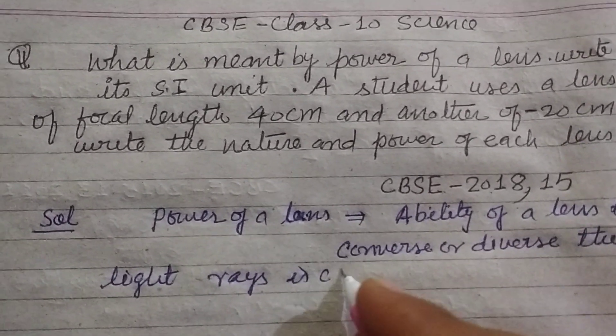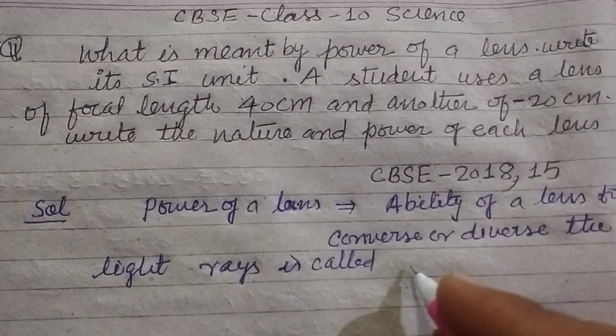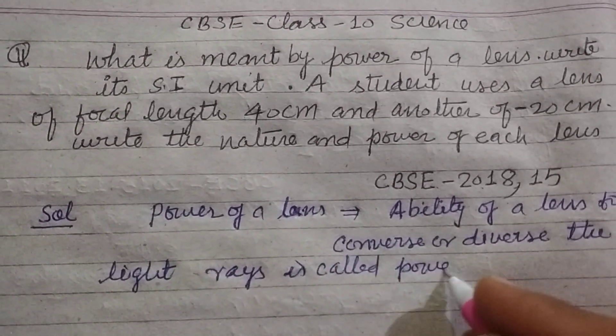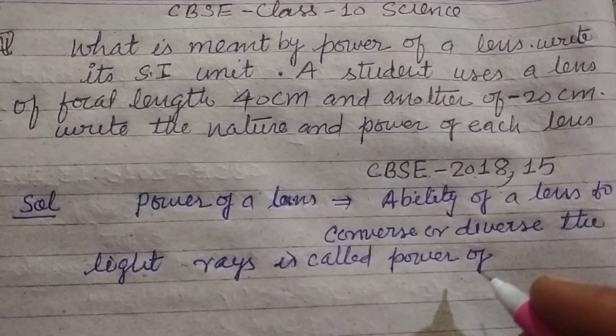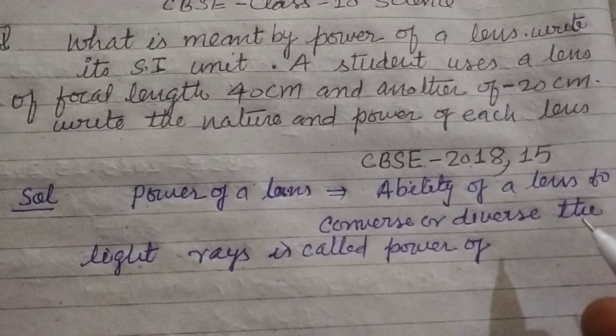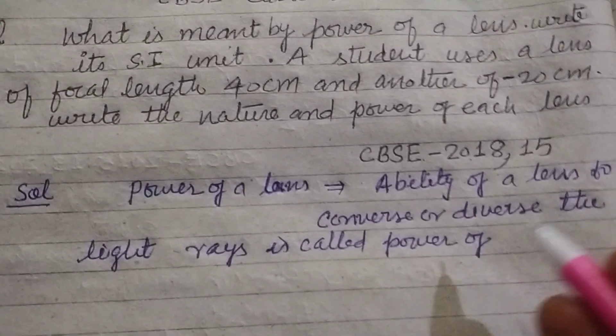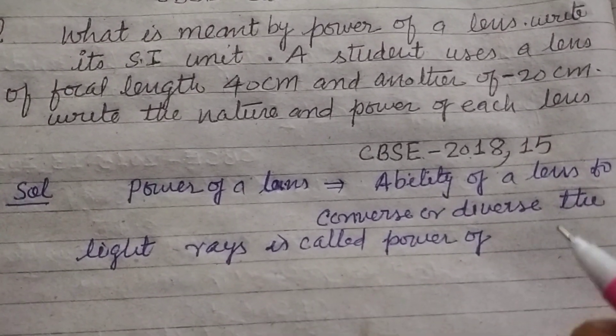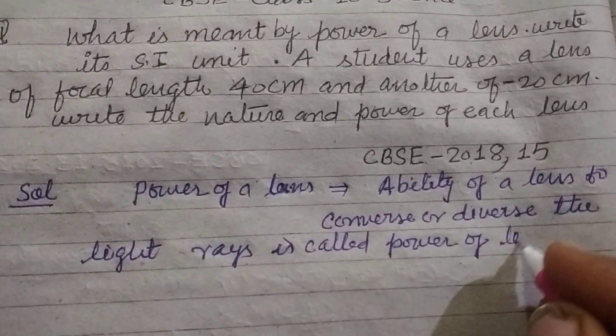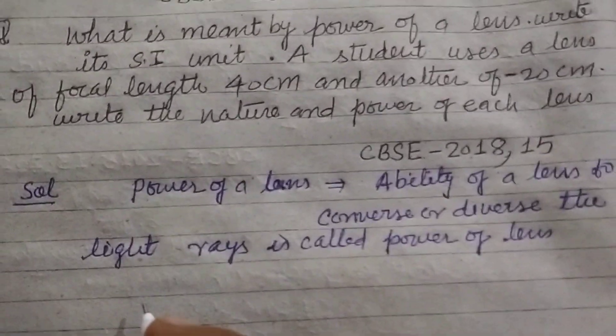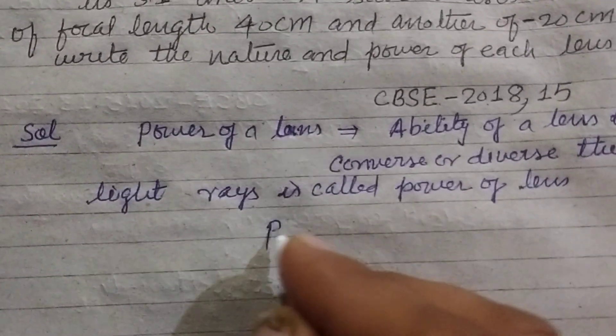This is called power of lens. A lens can converge or diverge the light rays. So this is the ability of a lens to converge or diverge the light rays, is called power of lens. Or you know that power of lens is the inverse of focal length when taken in meter.